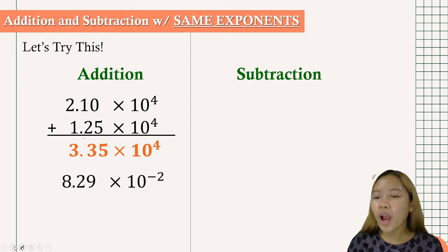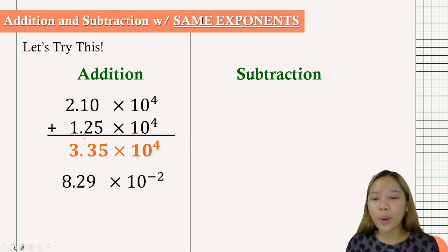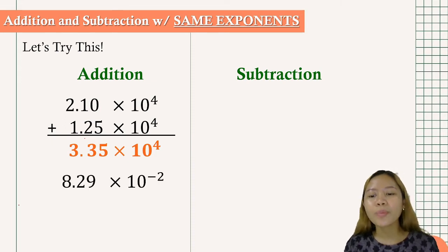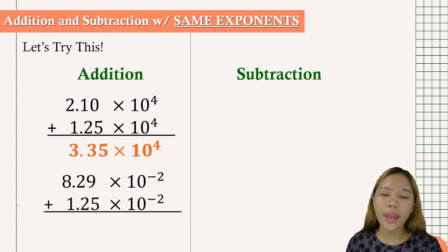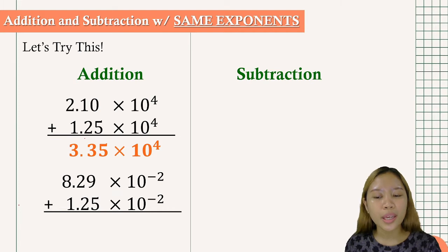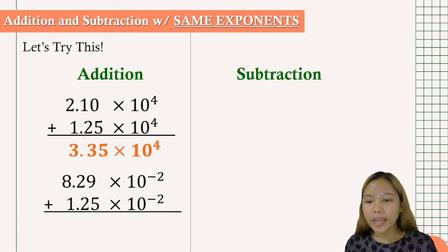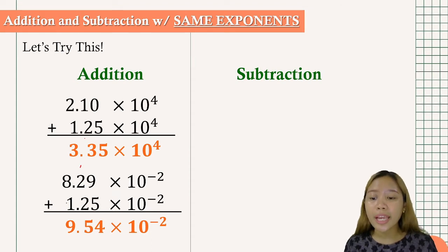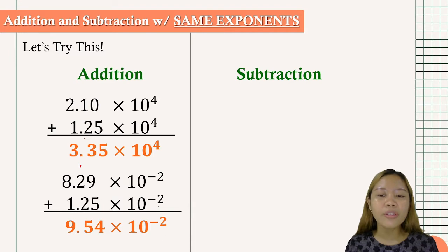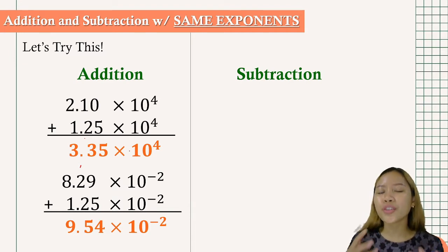Next, we have 8.29 times 10 to the negative 2 plus 1.25 times 10 to the negative 2. Simply add the values: 9 plus 4 gives 14, carry 1; then 1 plus 2 plus 2 gives 5; and 8 plus 1 is equal to 9. Bring down the power of 10. That's for addition.